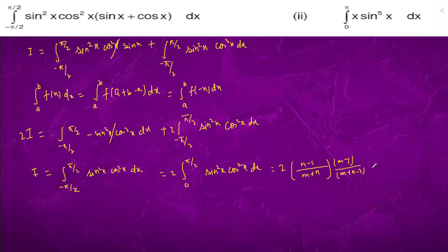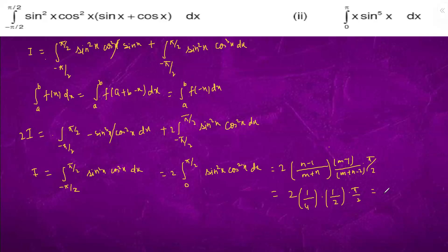This gives us: 2 minus 1 dot pi by 2. So n is 2, 2 minus 1 is 1; m plus n is 4, m minus 1 is 1; m plus n minus 2 is 2; times pi by 2. So this simplifies to pi by 8, which is the answer. We used the Wallis theorem.